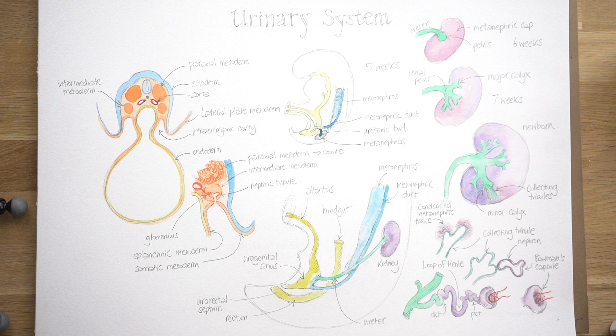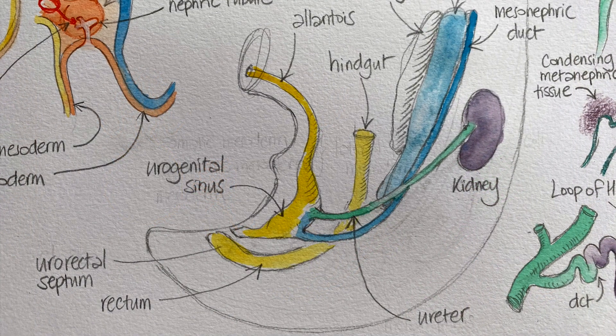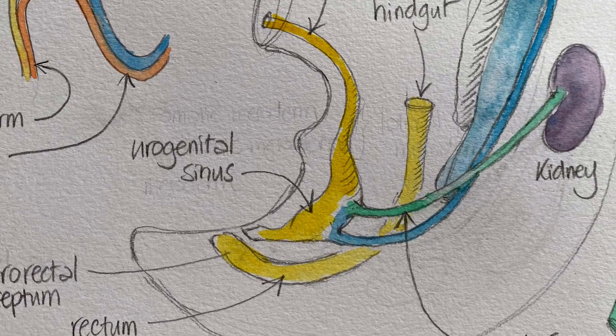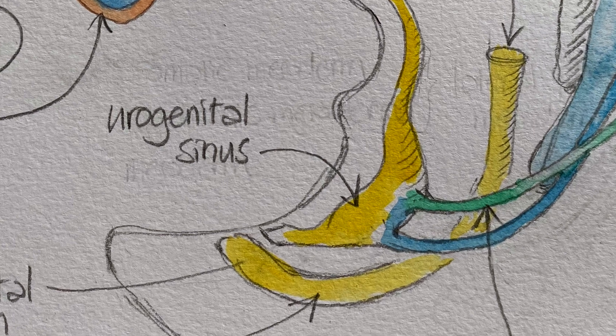The kidney is actually functioning in utero from about the 12th week of development — it is filtering the blood, producing urine that passes down the ureter into the forming bladder, and is actually passed out into the amniotic cavity, so fetal urine is contributing to amniotic fluid. All of the waste from the fetus is being removed via the placenta, so this really is just a filtrate of the blood contributing to amniotic fluid. As the kidney rises up, the relative positions of the mesonephric duct and the ureter switch around, so the ureter ends up emptying into the bladder itself, whereas the mesonephric duct enters into the urogenital sinus at the junction of the bladder and the urethra, just below.